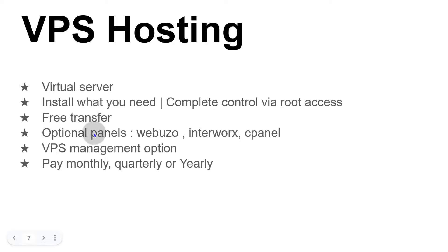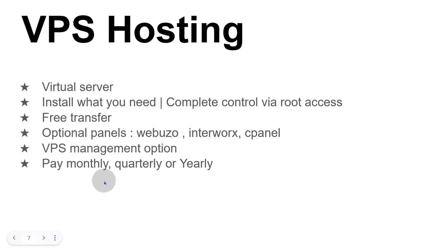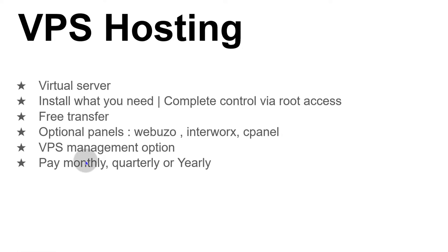When buying the VPS you can choose to install a control panel. Available options include Webuzo, Interworx, and cPanel. But this isn't a big deal because if you don't want to use any of those, just set up your server, log in via SSH, and you can follow tutorials to install a free control panel like STACP, Cyberpanel, or Virtualmin. For payment, you can pay monthly, quarterly, or yearly. My advice is to always start monthly — this way, if you don't like the VPS plan, you can always migrate to another cloud provider.